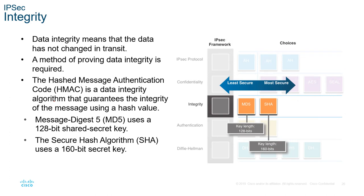After deciding on the confidentiality protocol, we look at the integrity protocol. We normally use some form of Hashed Message Authentication Code, or HMAC, to verify data integrity. The two main algorithms are MD5 or SHA. MD5 is the least secure of the two; SHA is more secure, with a default key of 160 bits in length.